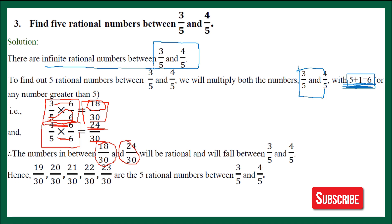All numbers between them can be written here: 19 upon 30, 20 upon 30, 21 upon 30, 22 upon 30, 23 upon 30. These are the 5 rational numbers between 3 upon 5 and 4 upon 5. I hope you understood. Let's do the next one.